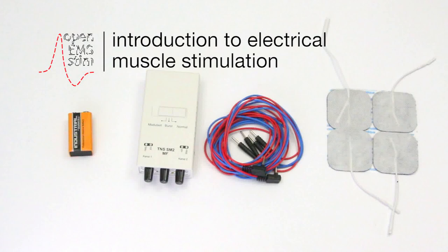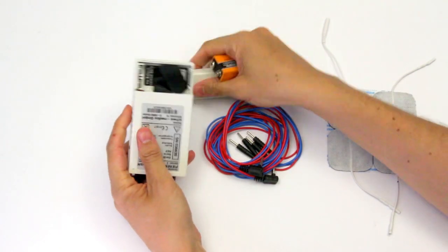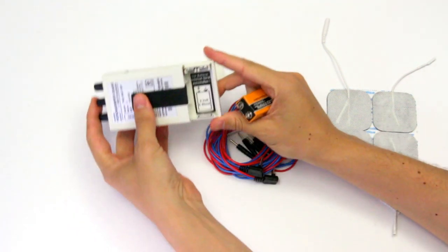Here I'm reviewing the basics of electrical muscle stimulation using an off-the-shelf muscle stimulator. This device works with a 9-volt battery. Make sure you plug it in the right way.